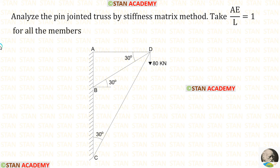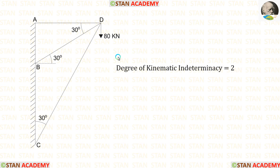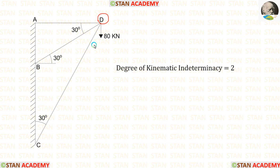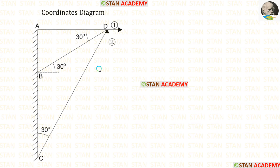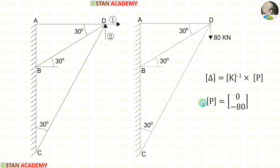Now let us see another problem. In this truss, AE/L equals 1 for all members. The degree of kinematic indeterminacy: points A, B and C are fixed so there is no displacement there, but at point D there is no support, so there will be vertical and horizontal deflections. Therefore the degree of kinematic indeterminacy equals 2. Now let us make the coordinates diagram — from joint D we remove the loads and give horizontal and vertical supports, with horizontal as the first coordinate and vertical as the second.